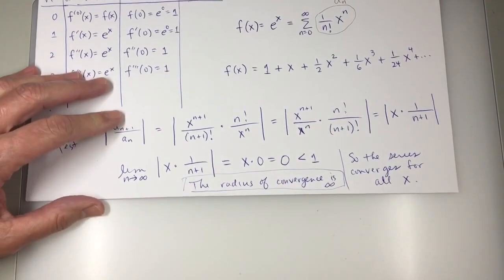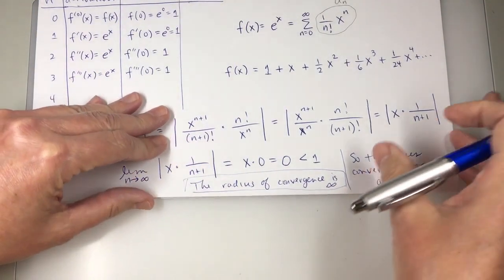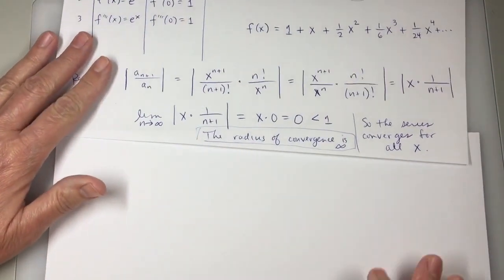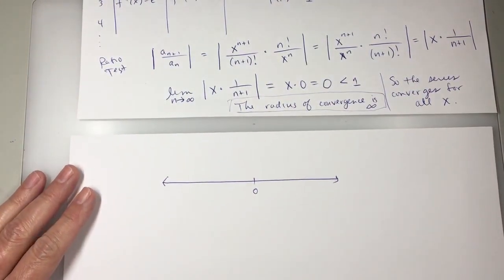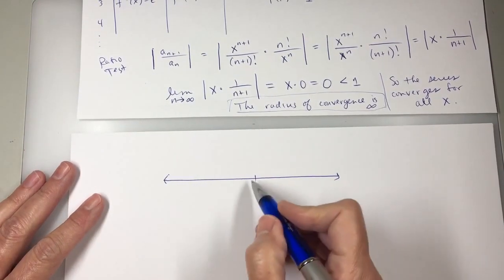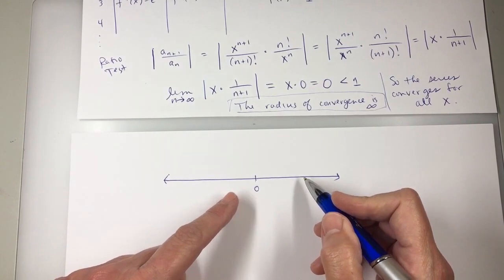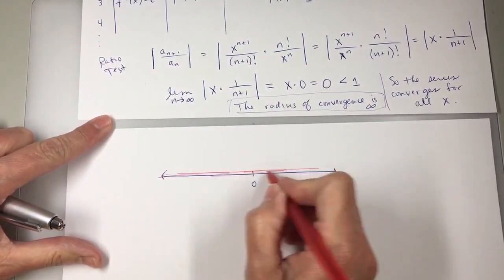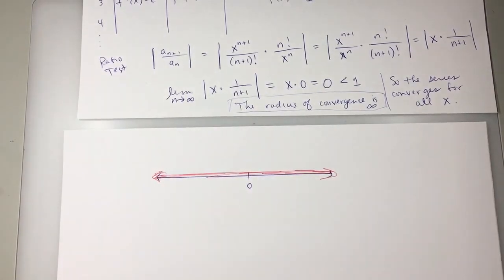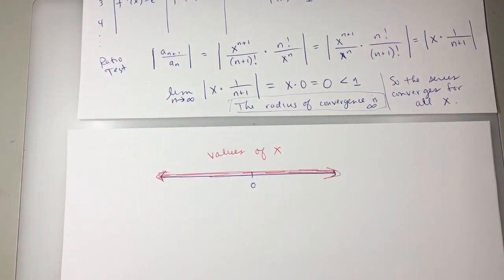If I think about a number line, if I decide I want to graph the numbers of x for which this converges, the entire number line would be shaded in. Back in the previous section, we were finding, it's centered at 0. That's obvious. It's a Maclaurin series. So it either converges only at 0 or it converges for some interval around 0. But since I've found that the limit is 0 regardless of the value of x, that tells me it converges on the entire number line. So that number line represents values of x for which it converges. And it's everywhere. So the radius of convergence is infinity. That's what we say.